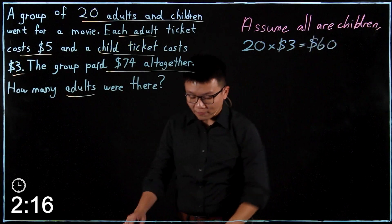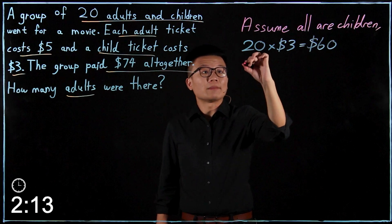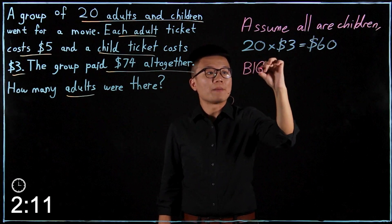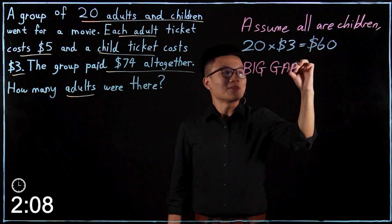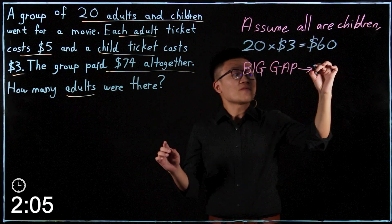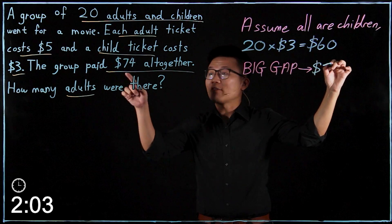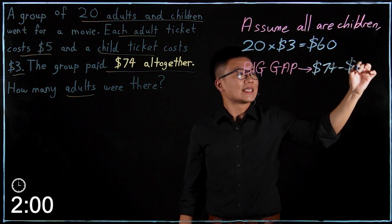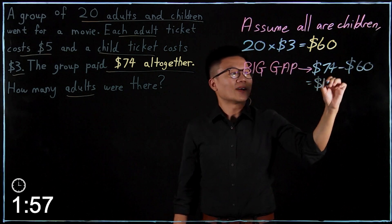Now there is obviously a big gap. So how do we find the big gap? We are going to take the amount of money that they actually spend in real life, which is $74, subtracting $60. We will get $14.